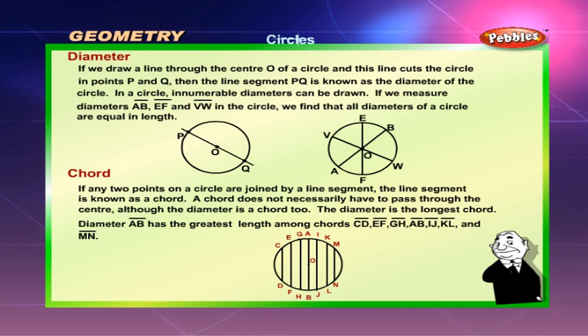If we draw a line through the center of a circle and this line cuts the circle in points P and Q, then the line segment PQ is known as the diameter of the circle. In a circle, innumerable diameters can be drawn. If we measure diameters AB, EF and VW in the circle, we find that all diameters of a circle are equal in length.